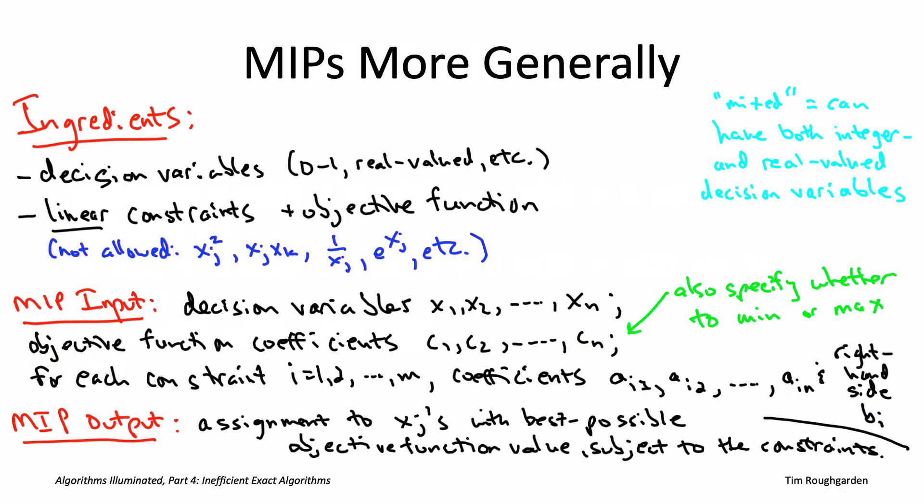So if you're trying to maximize an objective, you want the variable assignment that satisfies all the constraints and has as high an objective function value as possible.